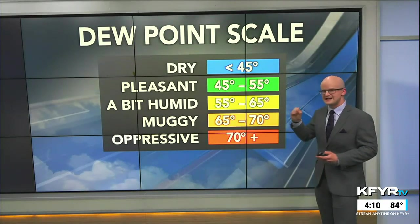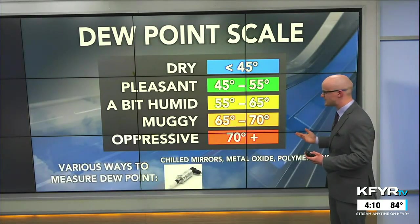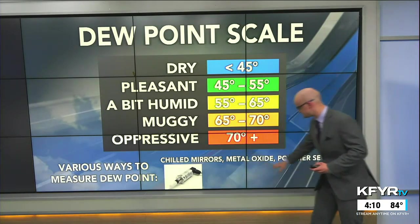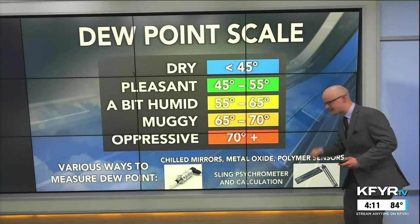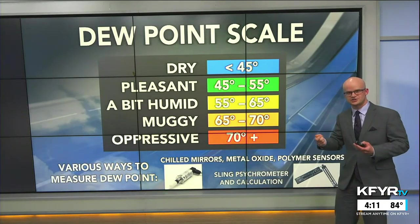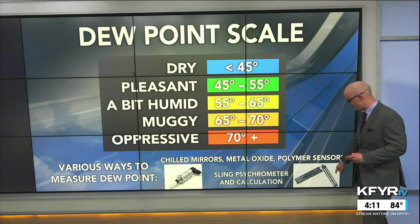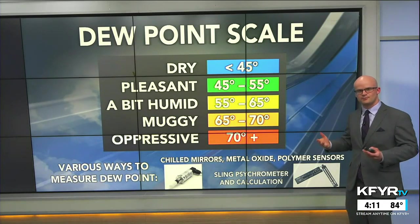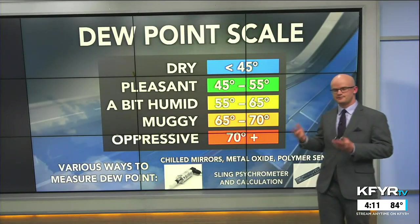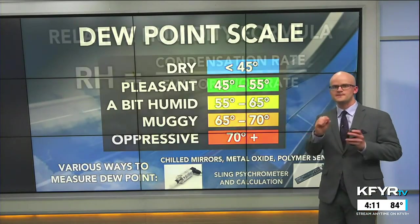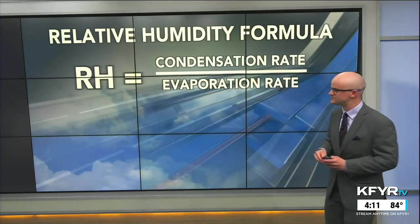Dew point is an absolute measure of the amount of moisture in the atmosphere. There are various ways to measure dew point with sensors. You can also use a sling psychrometer, which is a more old-fashioned technique that uses cloth material to evaporate moisture to calculate that dew point.